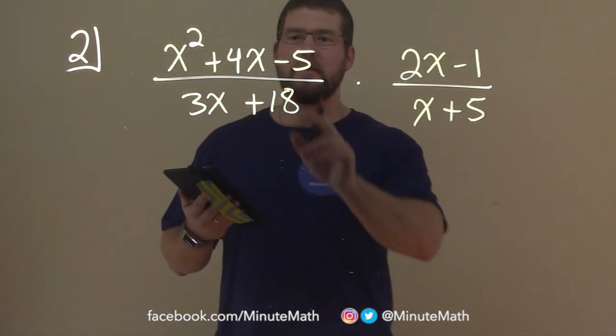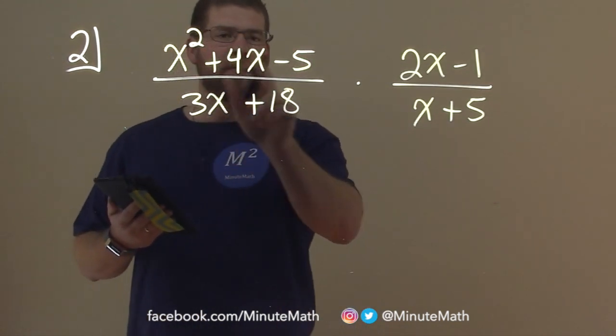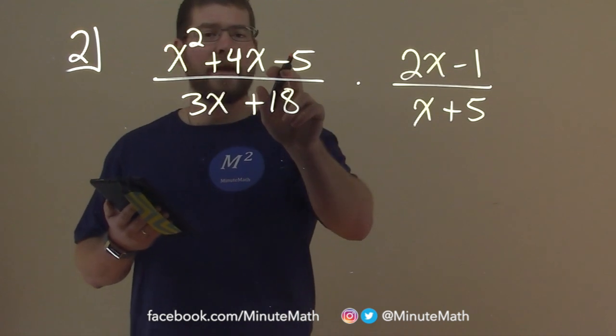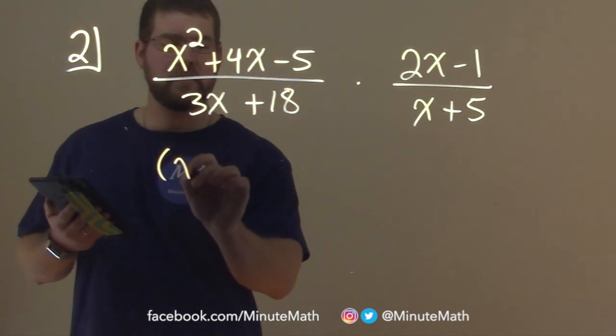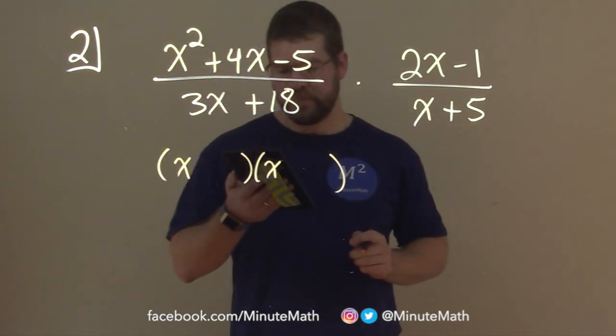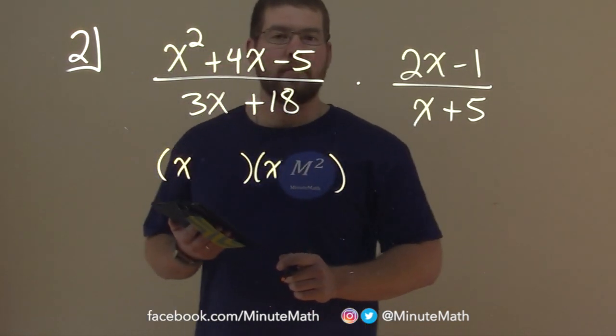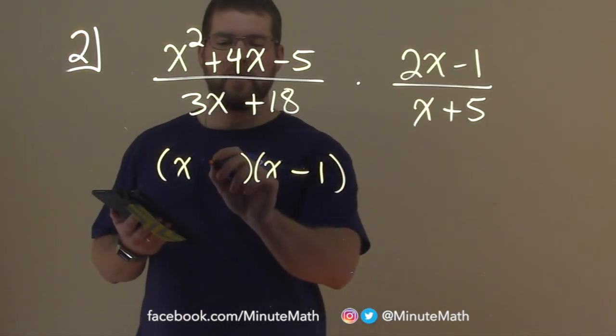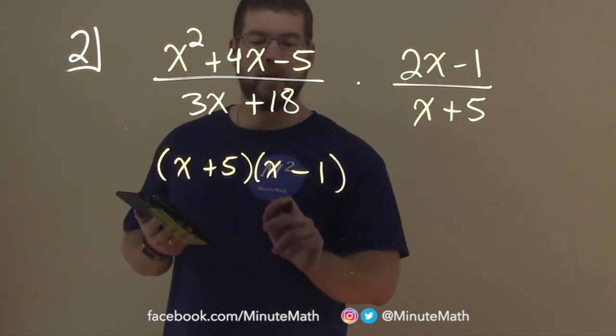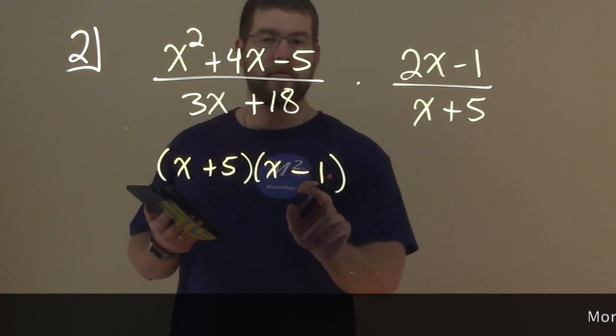So what do we have here in this numerator? Can we factor that numerator? Well, what two numbers multiply by negative 5 and add to be 4? Is it possible? Can you guess it? Well, what about a negative 1 and a positive 5? 5 times negative 1 is negative 5, and 5 plus a negative 1 is 4.